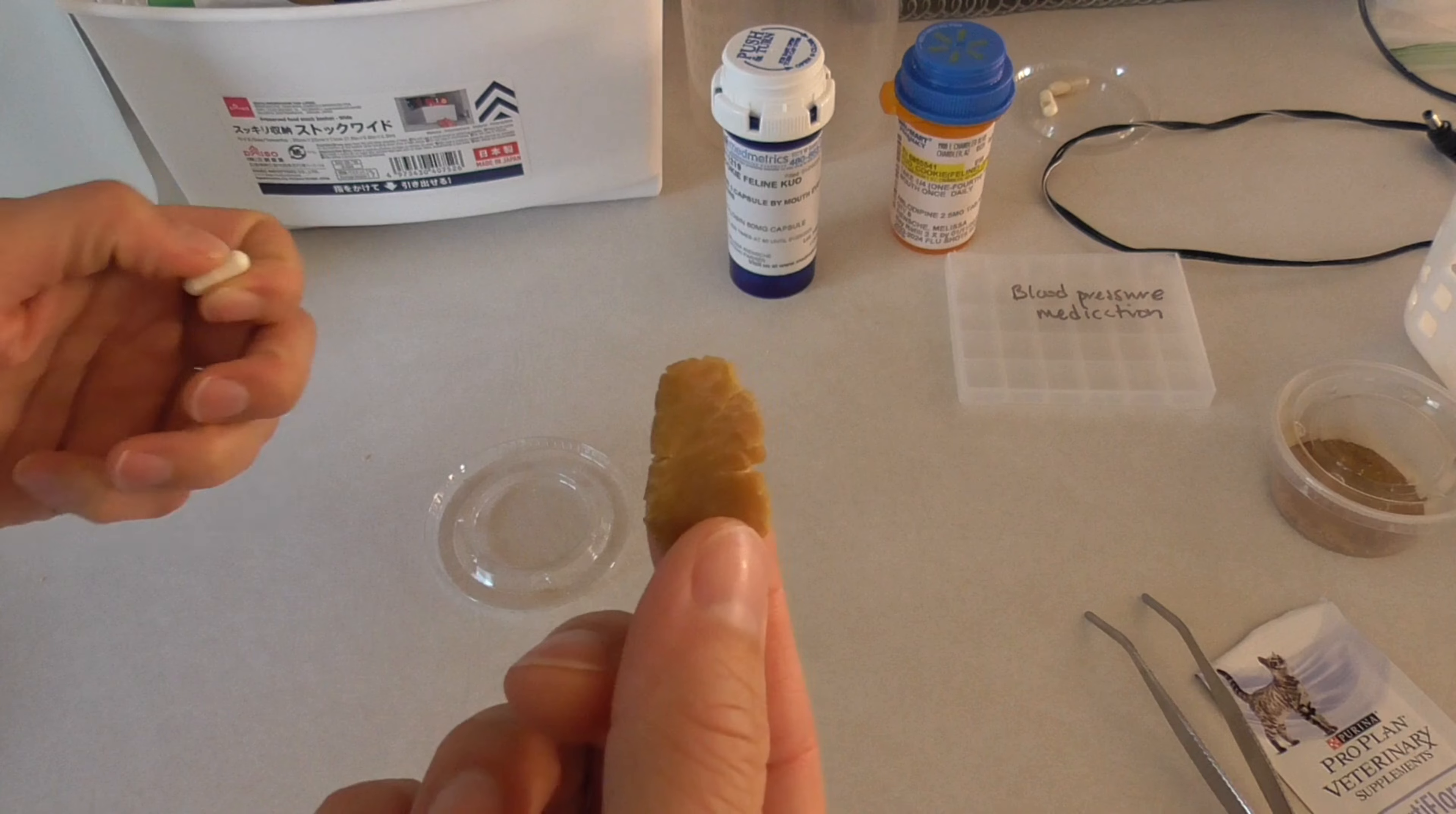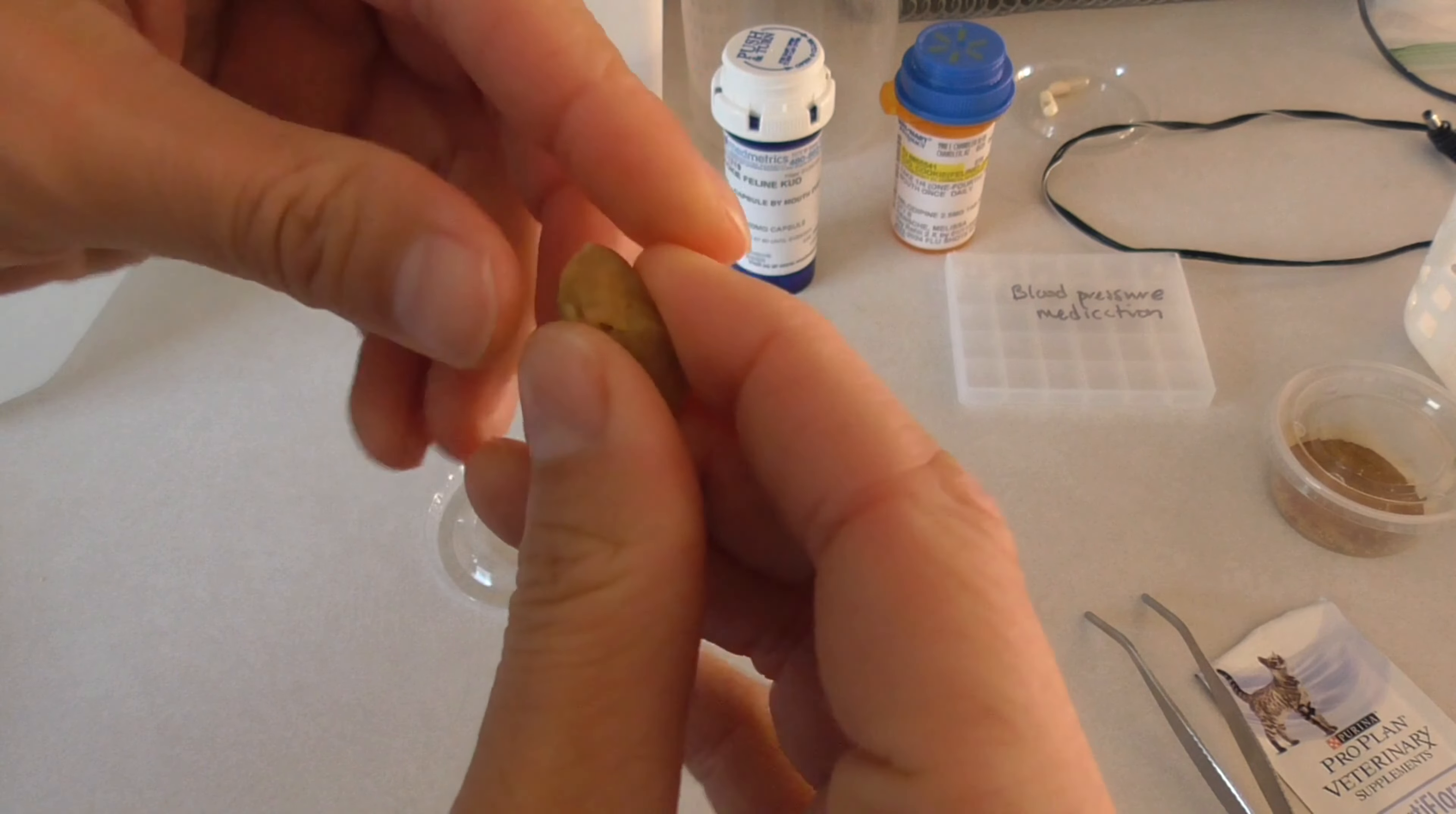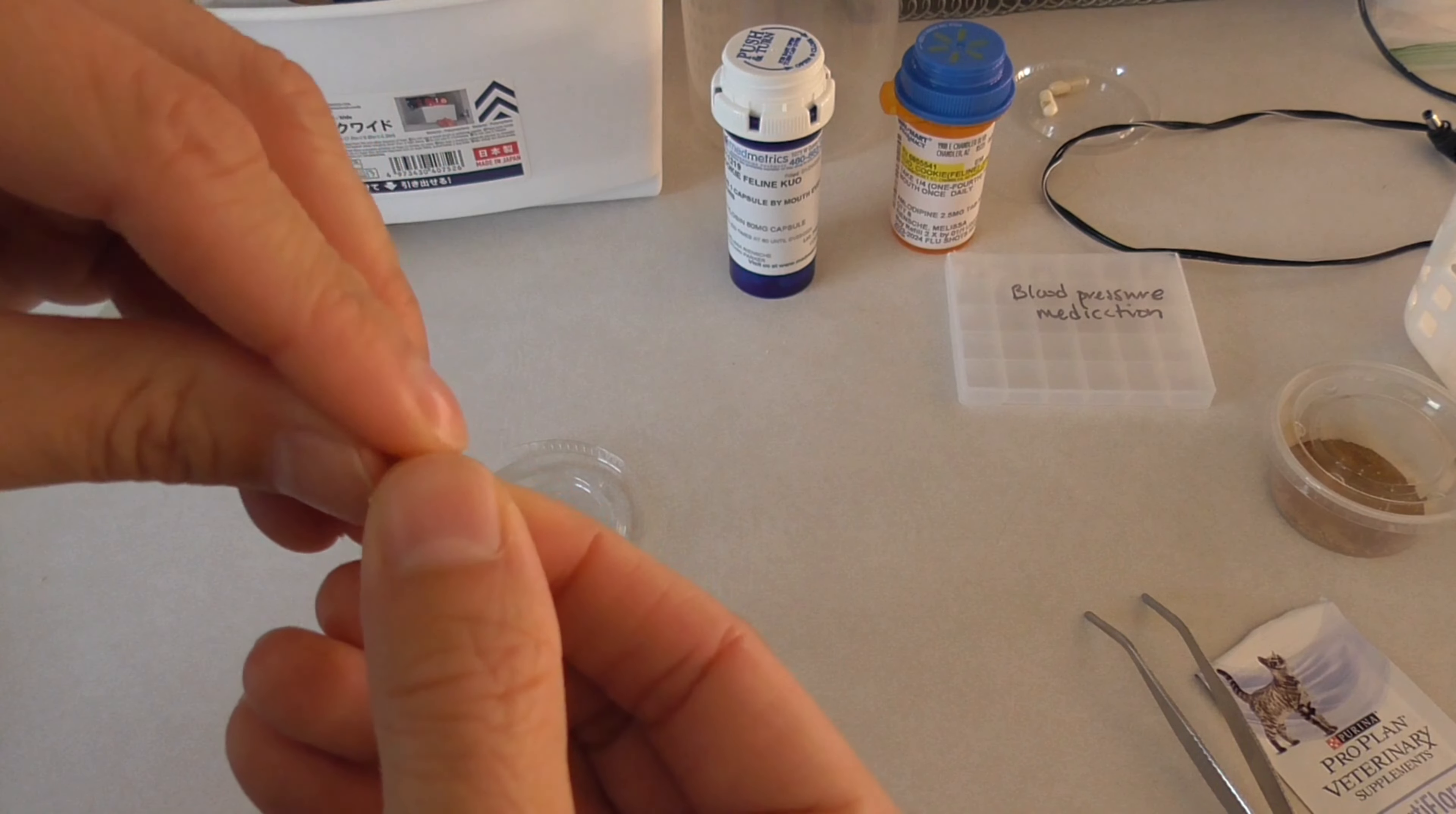You can kind of shape it to whatever shape. This is actually a little bit too big, but I'll take off the excess. What I do is roll the capsule into this pill pocket so that it surrounds the capsule. I used to use her thyroid medication because it was already a soft treat, but that treat kind of dries up over time and becomes more crumbly. I can't wrap the capsule with that thyroid medication anymore.